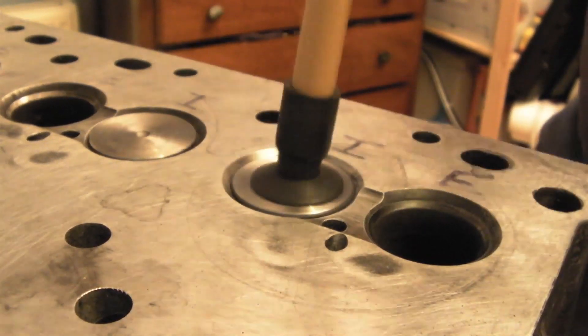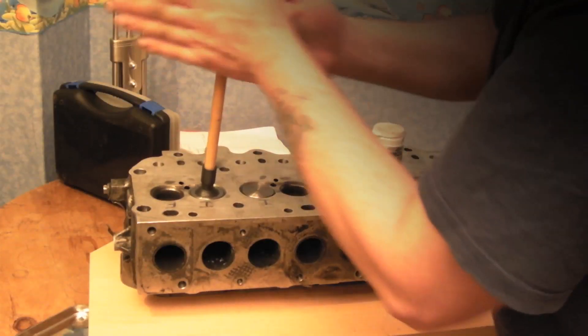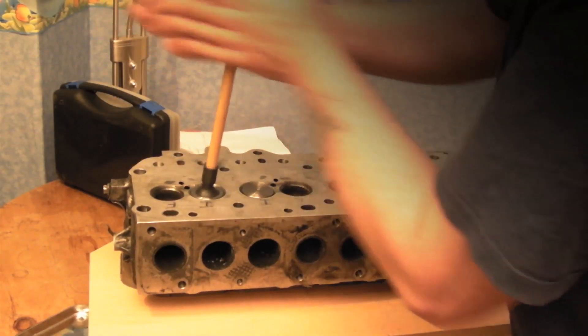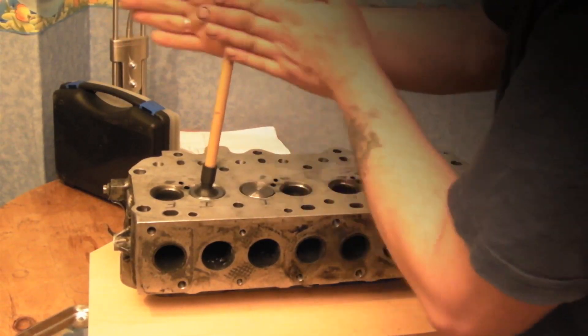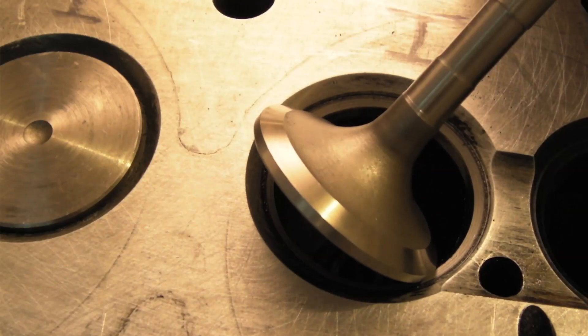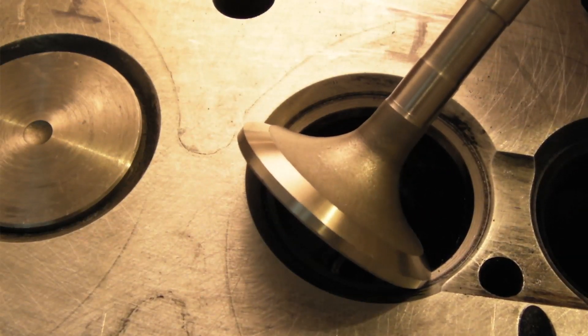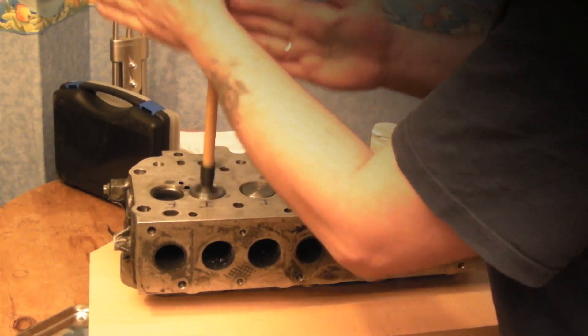Now valves actually do turn all the time in the cylinder head when the engine's running, and that helps to clean the carbon off. Of course, after a while they're going to trap little bits of carbon on the valve, and the heat causes pitting anyway.